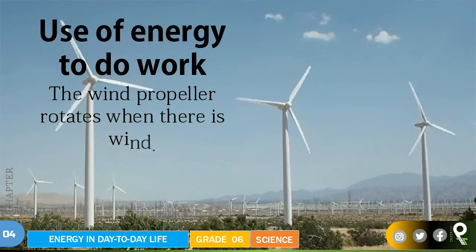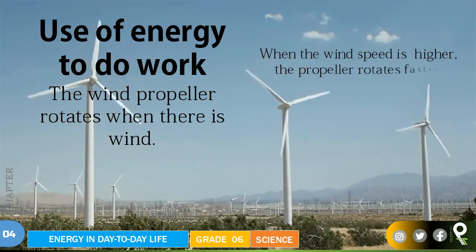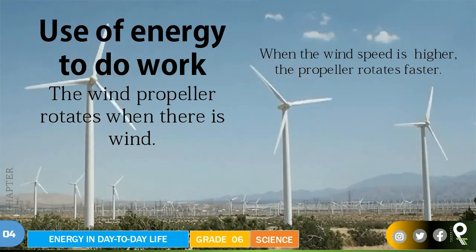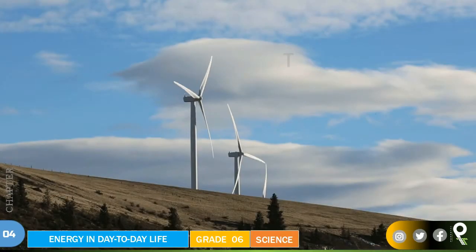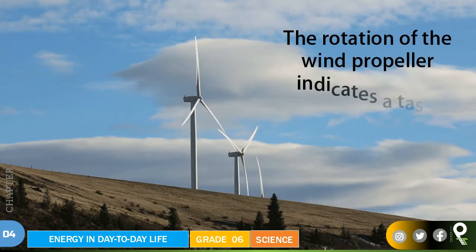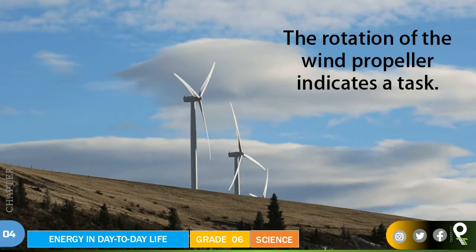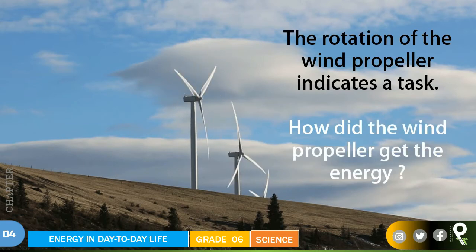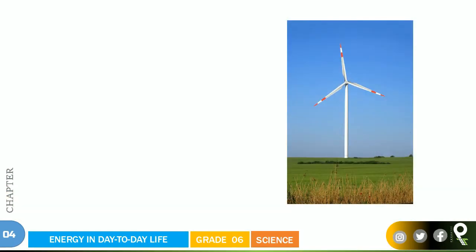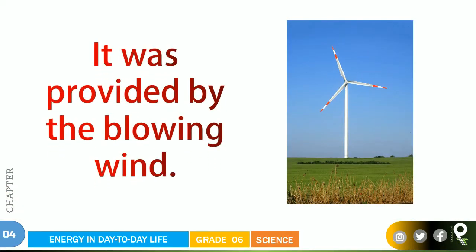The wind propeller rotates when there is wind. When the wind speed is higher, the propeller rotates faster, and you can test it by making a propeller like that and blowing the wind faster. The rotation of the wind propeller indicates a task being done. How did the wind propeller get the energy? It was provided by the blowing wind — the wind is helping the propeller to rotate.